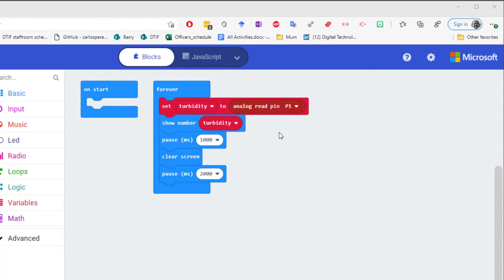So our goal is to create values between 1 which is very turbid and 10 which is very clear. So I'm going to download this code onto the microbit and then plug my turbidity sensor system together and let's see what sorts of values we get.